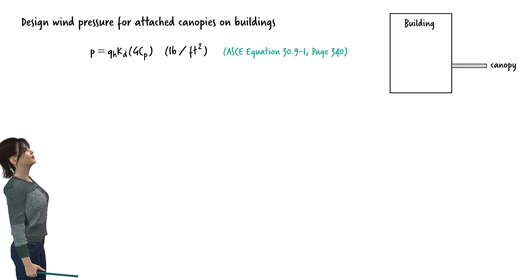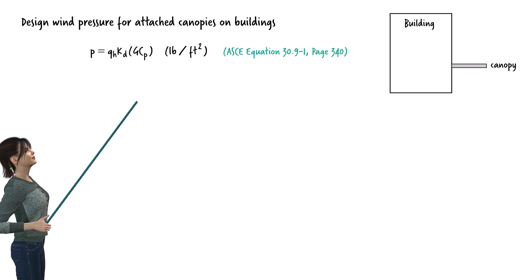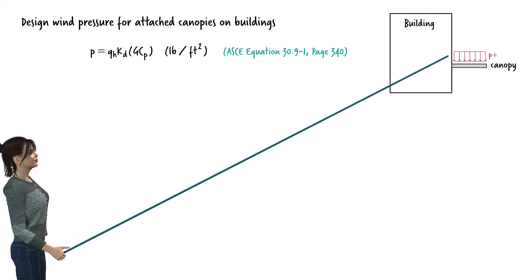The pressure that wind exerts on the canopy can be determined using this equation. This pressure can be positive, meaning it is directed toward the surface of the canopy, or it can be negative, indicating that it is pulling away from the canopy's surface.